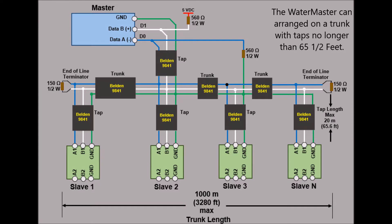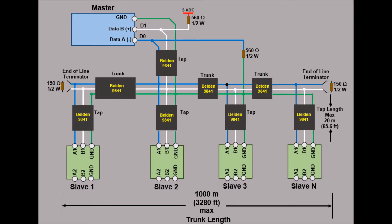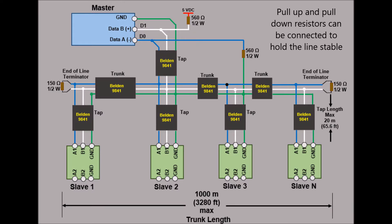The Watermaster can be arranged on a trunk with taps no longer than 65.6 feet. When there is no data activity on an RS-485 balanced pair, the lines are not driven and are thus susceptible to external noise or interference. To ensure the receiver stays in a constant state when no data signal is present, the signal lines need to be biased from a single point on the bus at or close to the master.